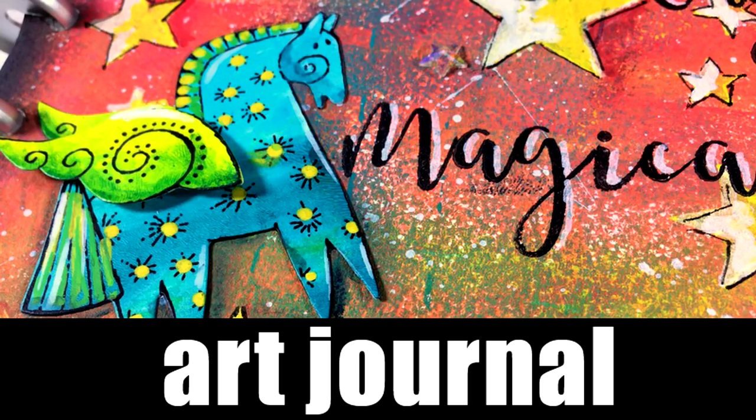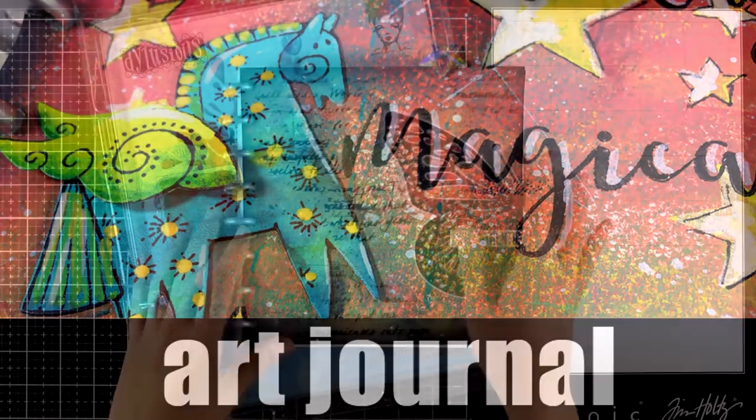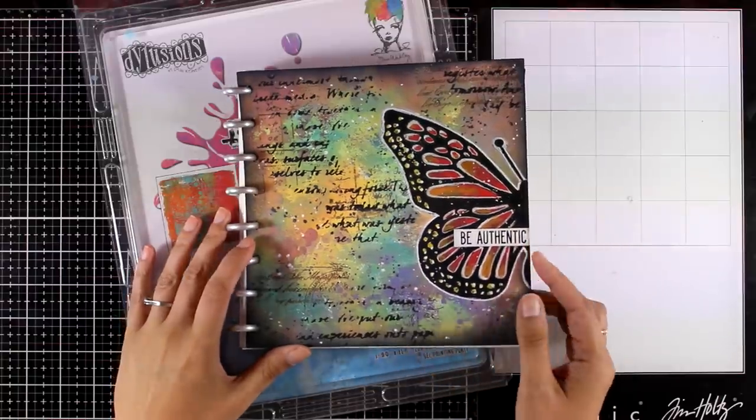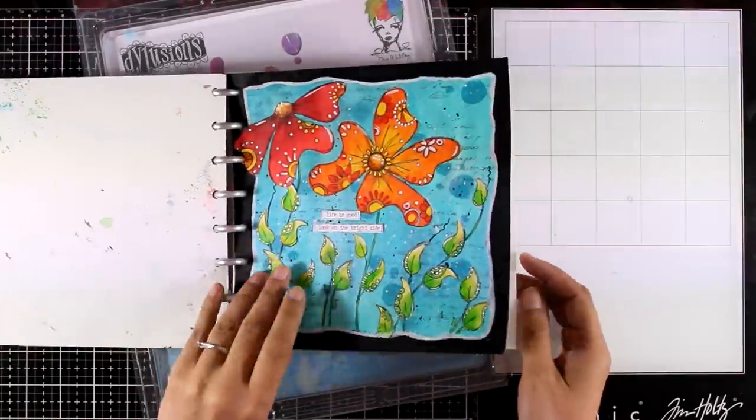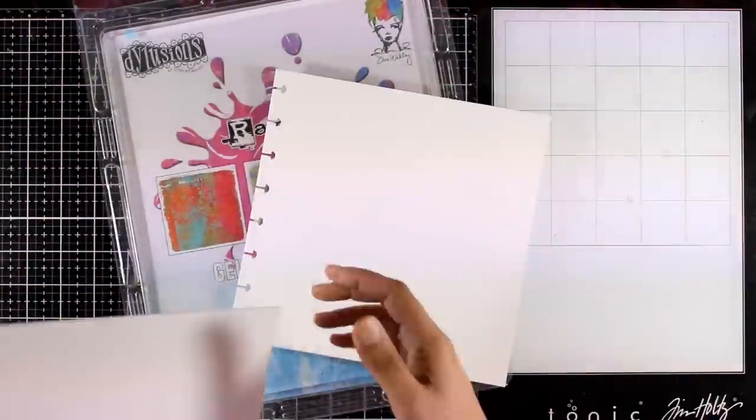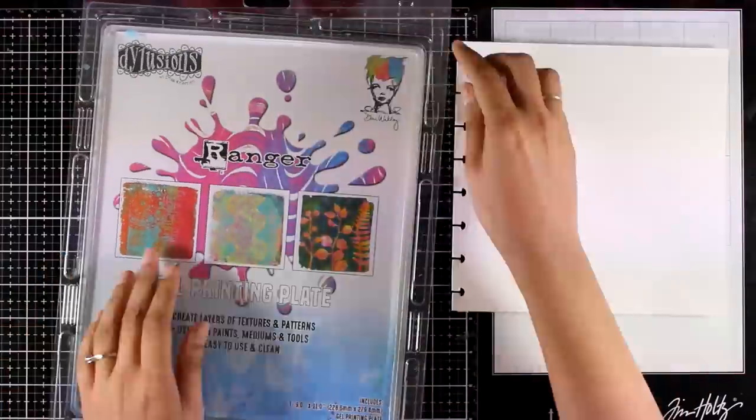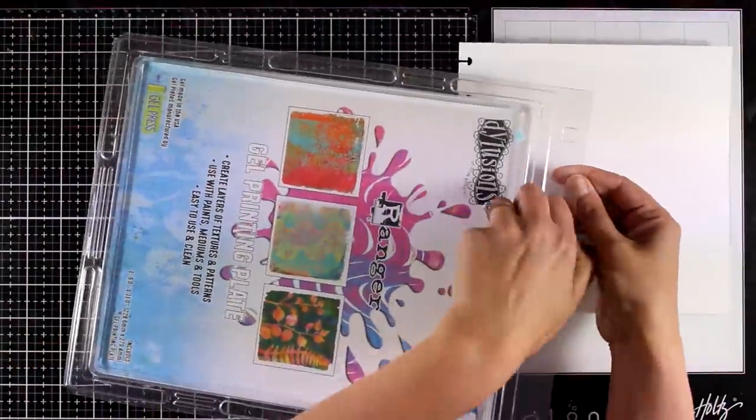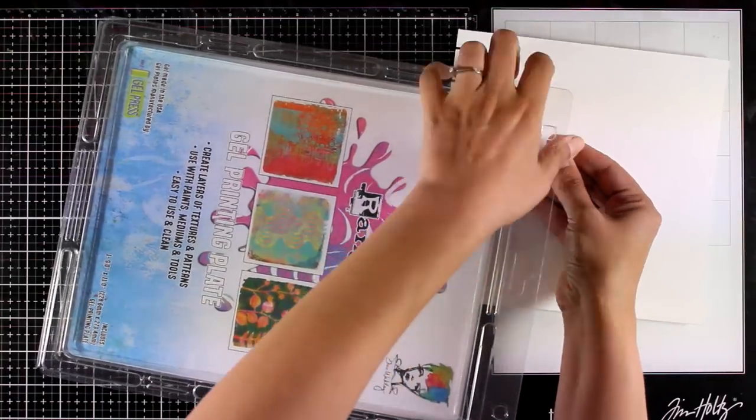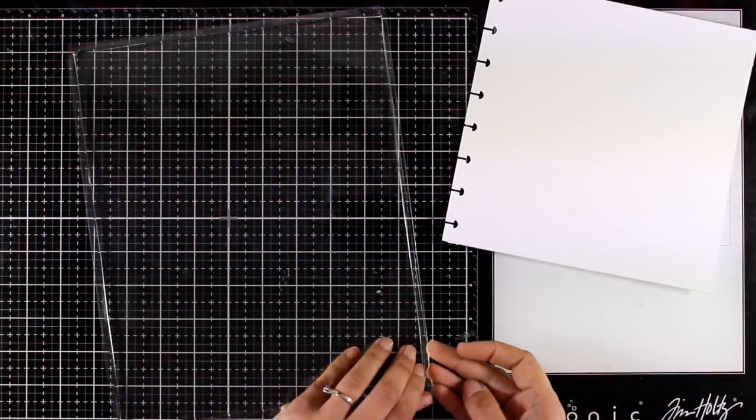Hi everyone, it's Vicky here and welcome back to another art journal layout. Today I'm going to play on my 8x8 disc bound journal. This is watercolor paper and I'm going to play with my gel plate. The gel plate that I'm using today is by Ranger and it's quite large, it's a 9x11.